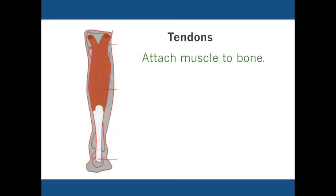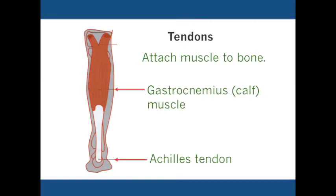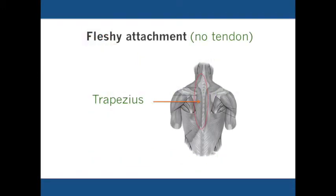Tendons consist of connective tissue that is continuous with the muscle sheath and attaches muscle to bone. For example, the gastrocnemius or calf muscle is attached to the heel by the large and strong Achilles tendon. Not all muscles attach to bones by tendons — some have fleshy attachments where the muscle fibers are directly affixed to the bone, usually over a wider area. This wide attachment helps distribute force. The trapezius muscle is an example of a fleshy attachment.